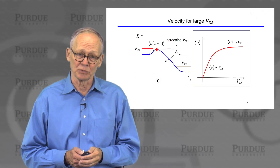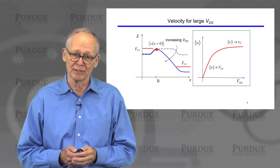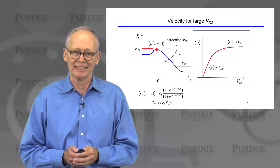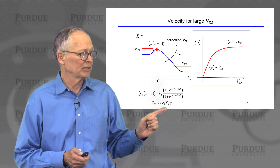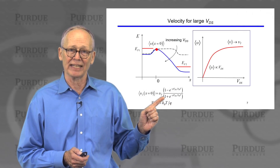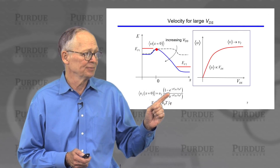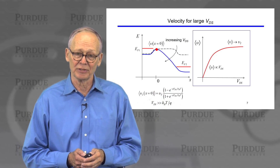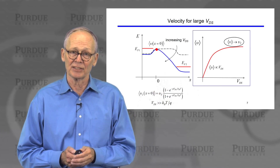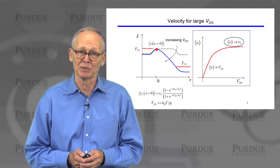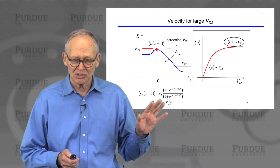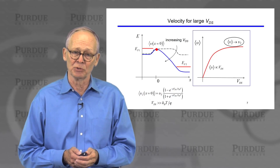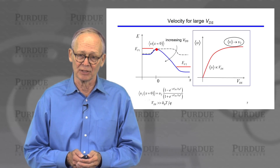Now let's turn to the large voltage limit between the drain and the source. In this case, it's even easier. Once the drain voltage gets above kT/q, these exponentials are going to become very small, and the velocity just saturates at the unidirectional thermal velocity. In between, we just smoothly go from one limit to the other.